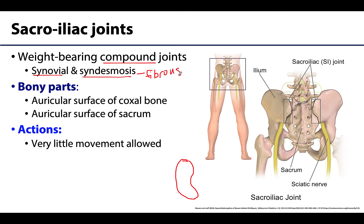So we have both a fibrous joint and a synovial joint associated with the sacroiliac joint. It is a synovial joint, and synovial joints are freely movable, but the sacroiliac joint is pretty closely locked into place. You have very strong ligaments that really limit the movement allowed at these joints. You want some flexibility to move your hip a little bit, but not too much because of the significant weight bearing associated with the pelvic girdle. These are very stable joints with very little movement allowed.